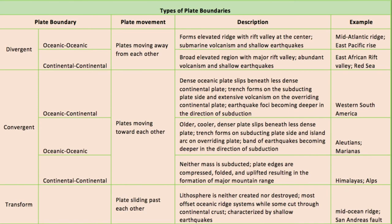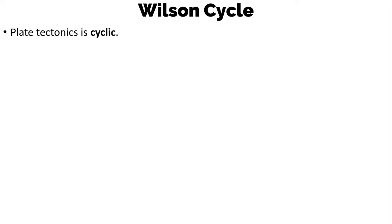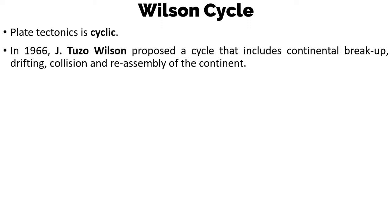This slide shows the types of plate boundaries: divergent, convergent, and transform. In divergent boundaries you have oceanic-oceanic and continental-continental. In convergent boundaries you have oceanic-continental, oceanic-oceanic, and continental-continental. Another concept to know is the Wilson Cycle, which states that plate tectonics is cyclic. In 1966, J. Tuzo Wilson proposed a cycle that includes continental break-up, drifting, collision, and reassembly of continents.